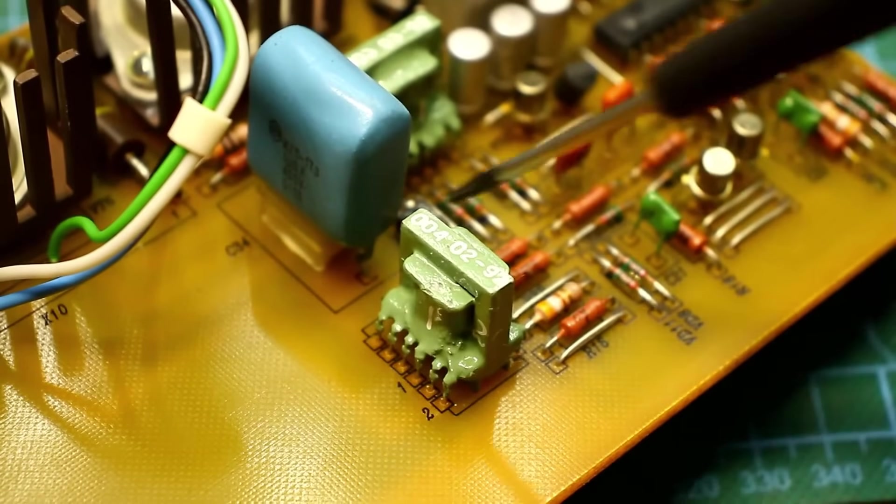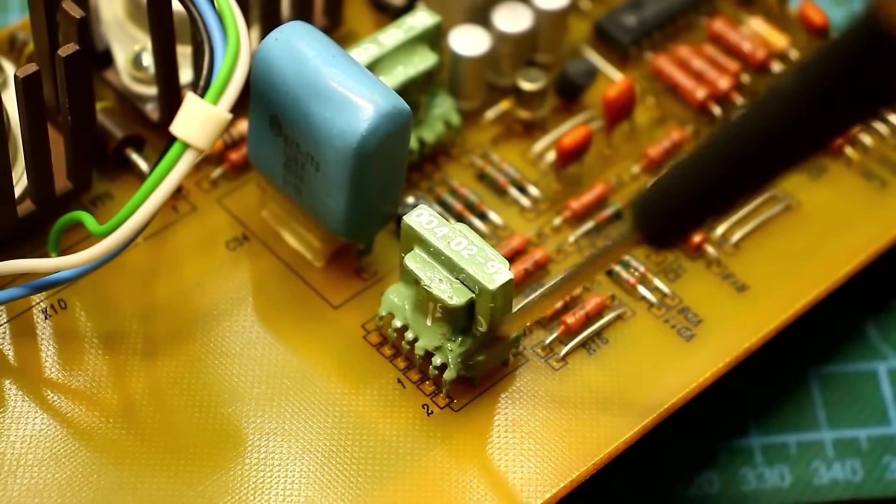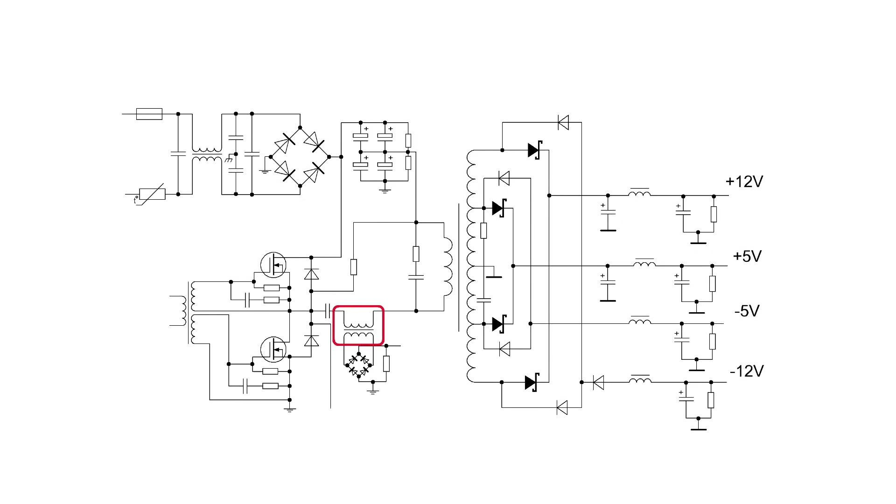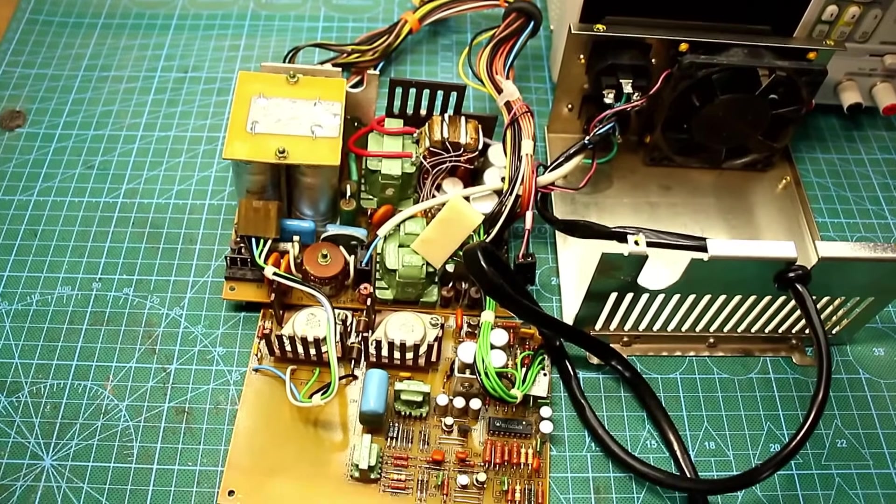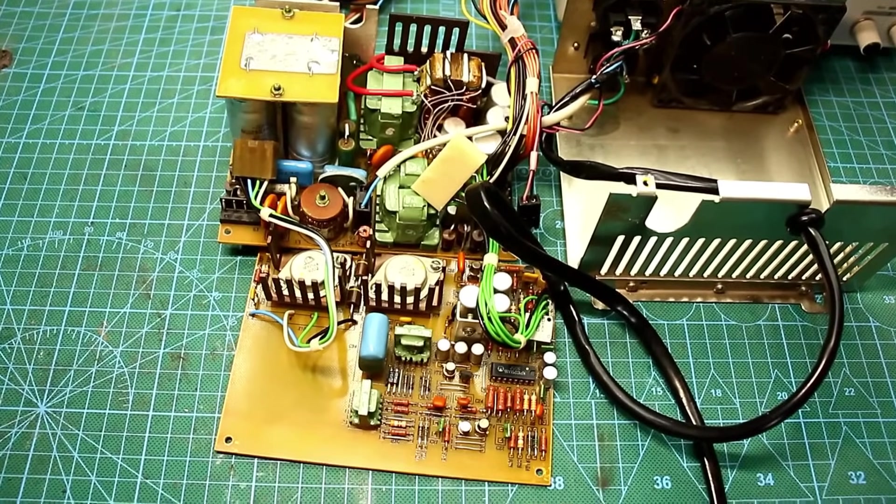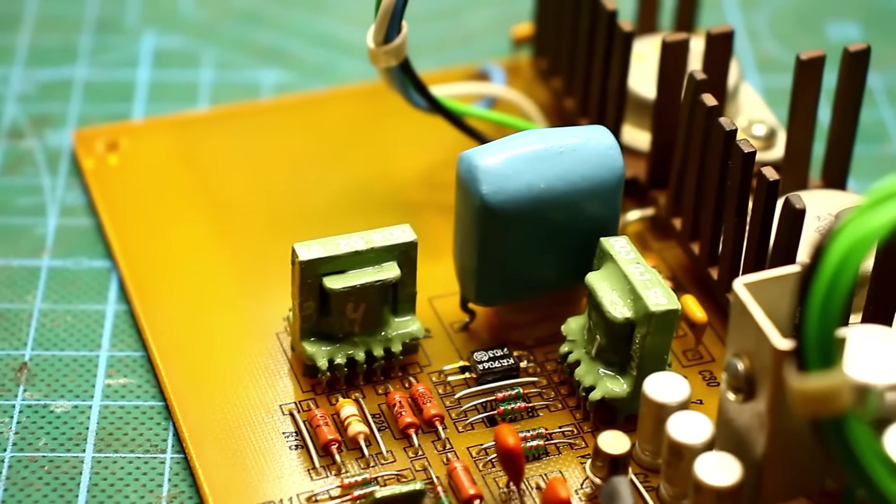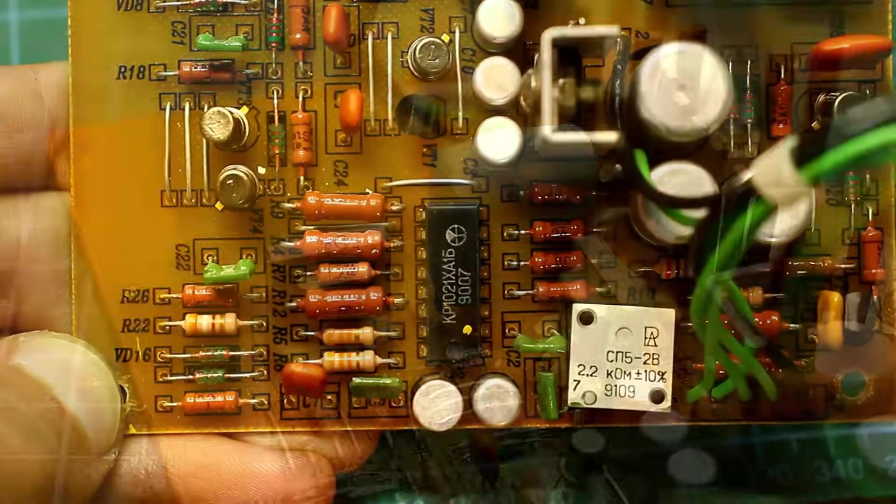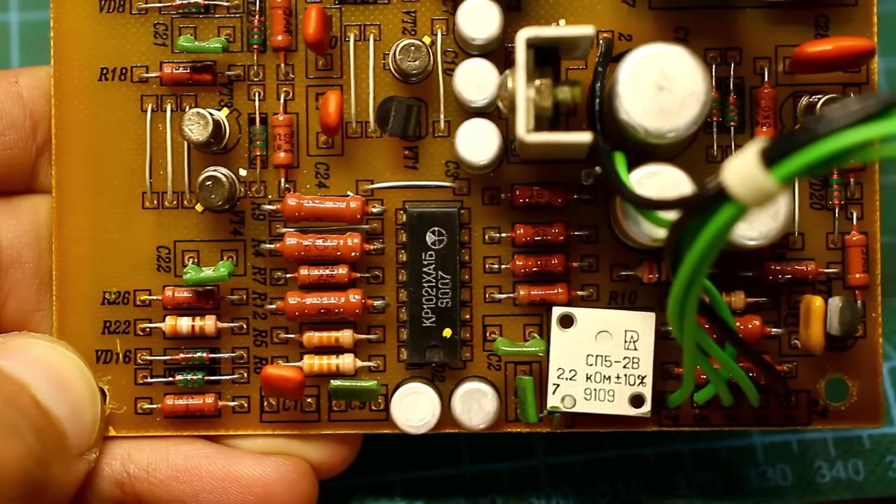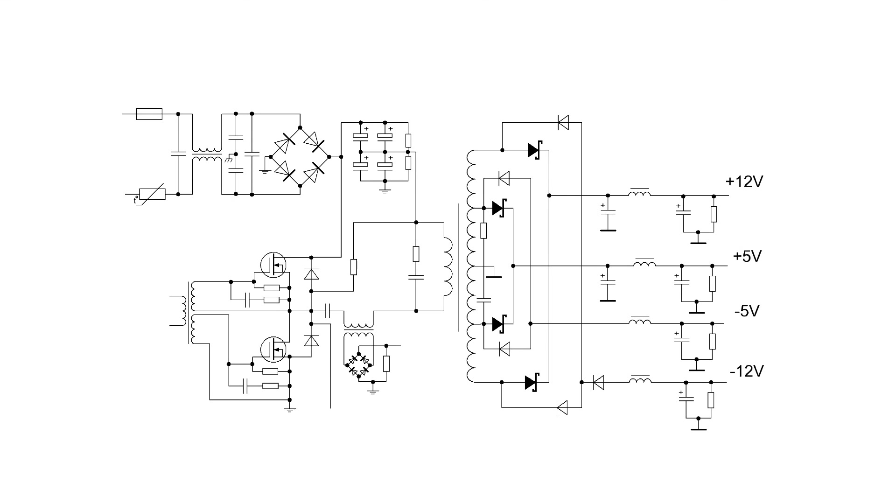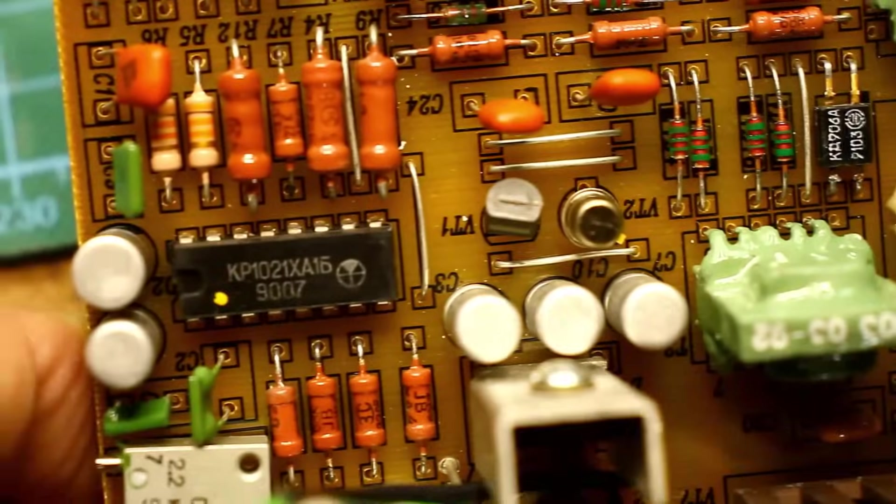Another small transformer is a current transformer. The current protection is built on its basis. The secondary voltage from this transformer is rectified and goes to the load resistor, which also serves as the current sensor. With an excessively large load on the output or in the event of short circuits, there is a surge of current in the primary circuit. As a result, the voltage on the secondary winding of the current transformer increases, as does the voltage drop across the current sensor. When the voltage on the current sensor reaches the limit, the controller will shut down the circuit.